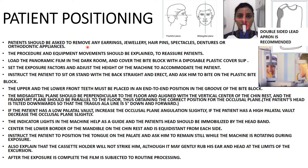For patient positioning: the patient should be asked to remove earrings, jewelry, hairpins, spectacles, dentures, or orthodontic appliances, as these objects can create ghost images on the panoramic image. The procedure and equipment movement should be explained to the patient. Load the panoramic film in the darkroom and cover the bite block with a disposable plastic cover slip. Set the exposure factors and adjust the height of the machine to accommodate the patient.